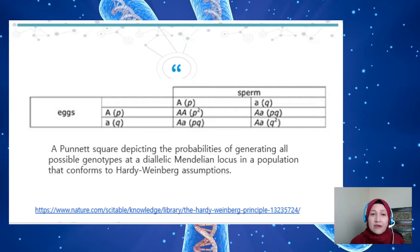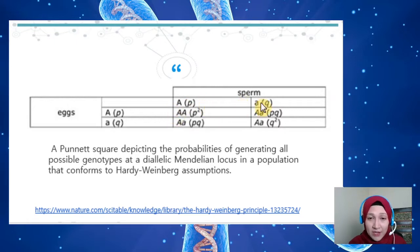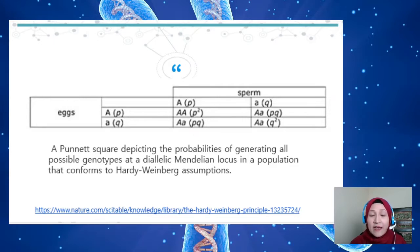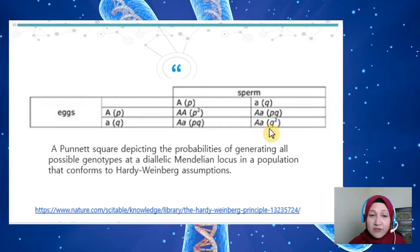For example, in reproduction we have genetic components from sperm and from eggs. Each has two alleles — capital A and small a. Each allele can be either p or q, where p is the dominant allele and q is the variant allele. This Punnett square depicts the probability of generating all possible genotypes during reproduction: homozygous wild type, heterozygous, or homozygous variant.